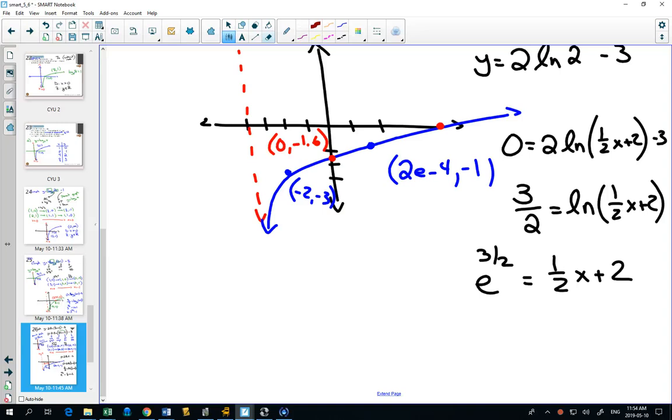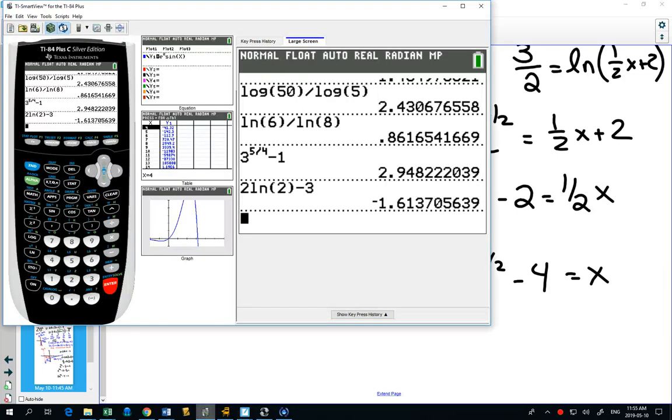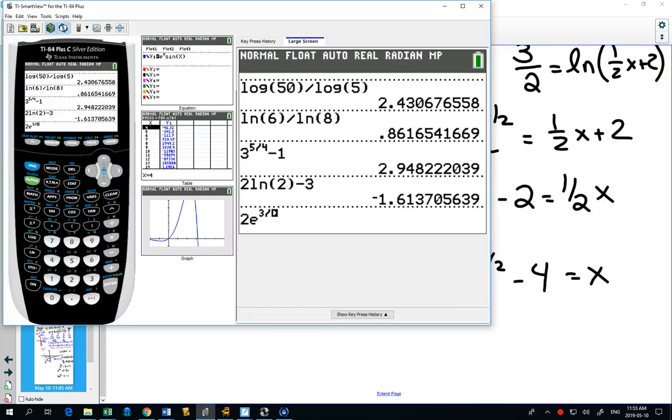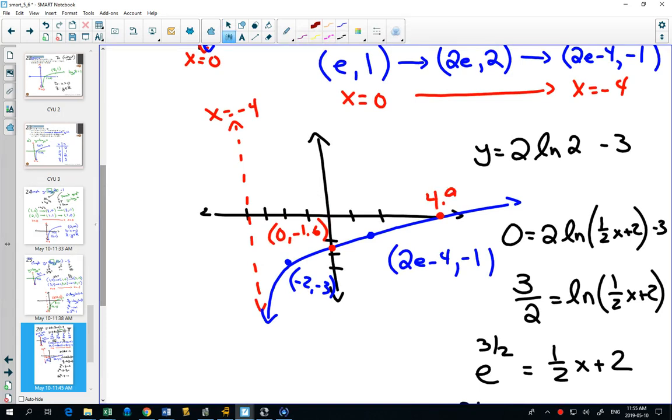How do you find a y-intercept? Plug in 0 for x. The y-intercept is always the easiest one. We look at our original equation, y equals 2 natural log of (½ times 0 + 2) minus 3, which is 2 natural log of 2 minus 3. There is your y-intercept. Again, not a very nice number. We could find out what it is exactly: 2 natural log of 2 minus 3. See how close we were in our graph? -1.6. Not bad. 0 comma -1.6.